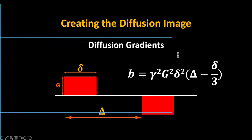If you have a B value of zero — meaning you didn't apply any de-phasing gradient — that's essentially identical to a T2-weighted functional scan. We acquire at least one, maybe two of those as a sort of baseline image. Having just B value zero and 1000 is not multi-shell. The range for BVALs is roughly 500 to 3000 for different values. If you had 500 and 1000, for example, then it becomes multi-shell.